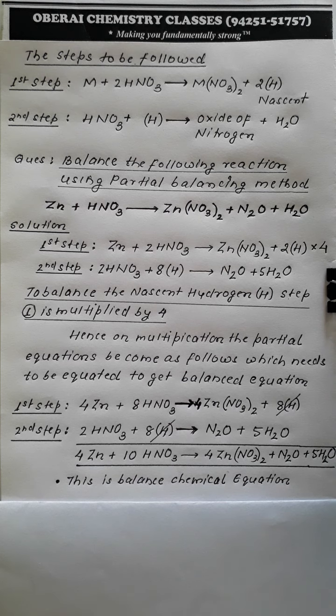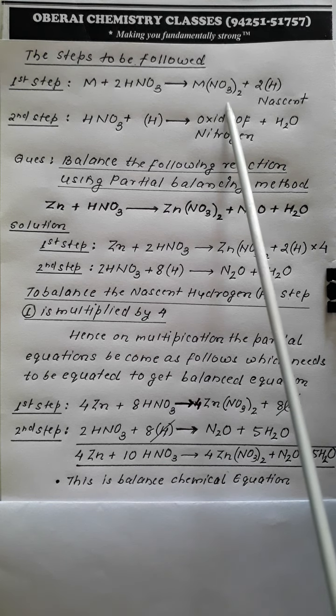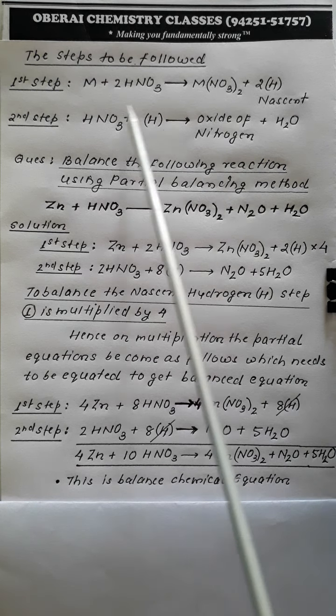We are dealing with the partial balancing method for the reaction between a metal and nitric acid. When any metal is made to react with nitric acid, this reaction always takes place in two steps. In the first step, the metal reacts with nitric acid to produce metal nitrate and nascent hydrogen. In the second step, the nitric acid reacts with nascent hydrogen from step one to form an oxide of nitrogen and water.